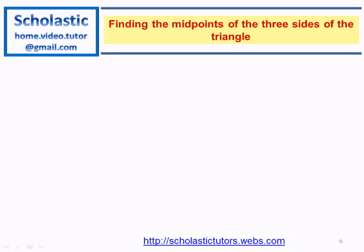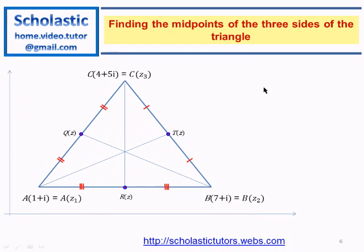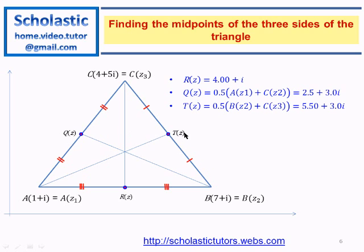Lastly we need to find the midpoints of the three sides of the triangle. These are three sides Q, T, and R. R equals 4+i which we found earlier. Q is the midpoint of this side, using the equation: 0.5 times the addition of the two complex numbers, z₁ plus z₃ times 0.5. Get this answer for the midpoint z_Q. And similarly midpoint z_T, you get 5.5 + 3.0i.